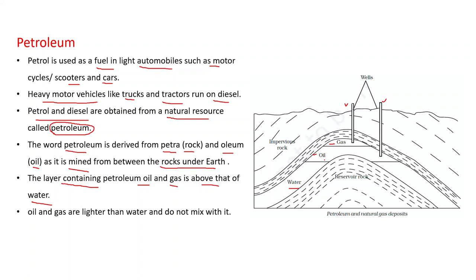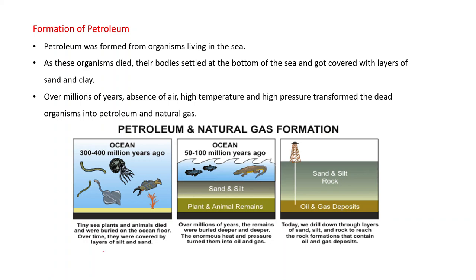Oil and gas are found above water, which indicates that oil and gas are lighter than water and do not mix with it. Now, how is petrol formed? We discussed that coal is obtained from the decay of forests.